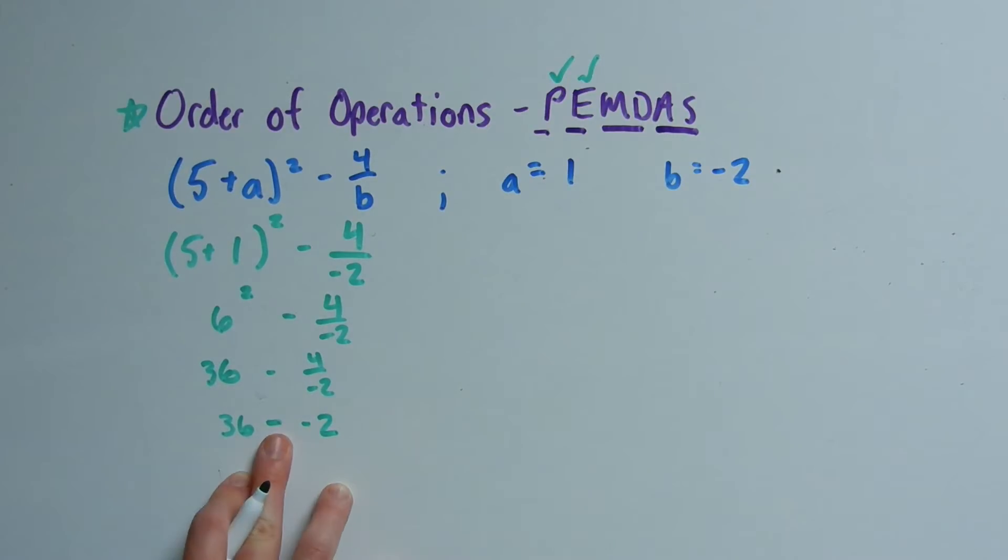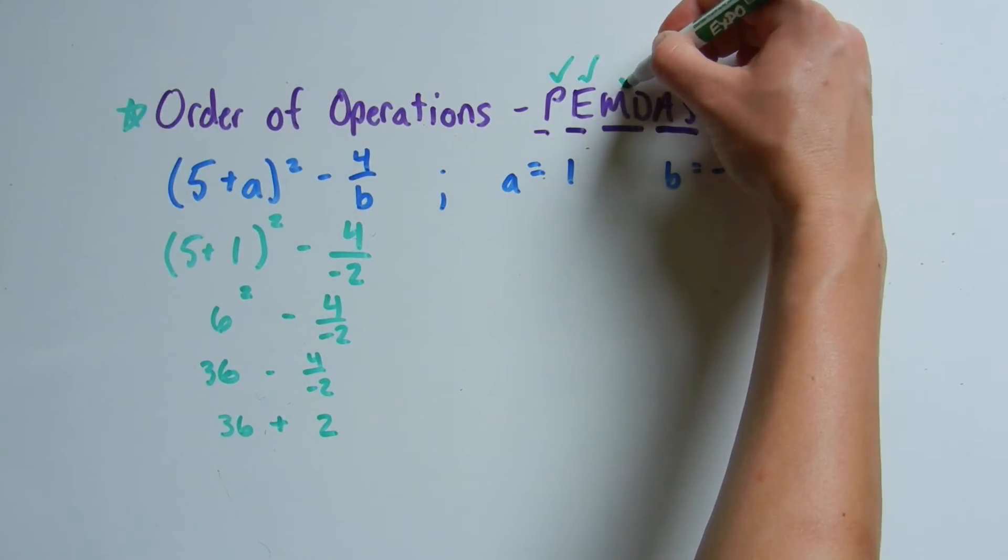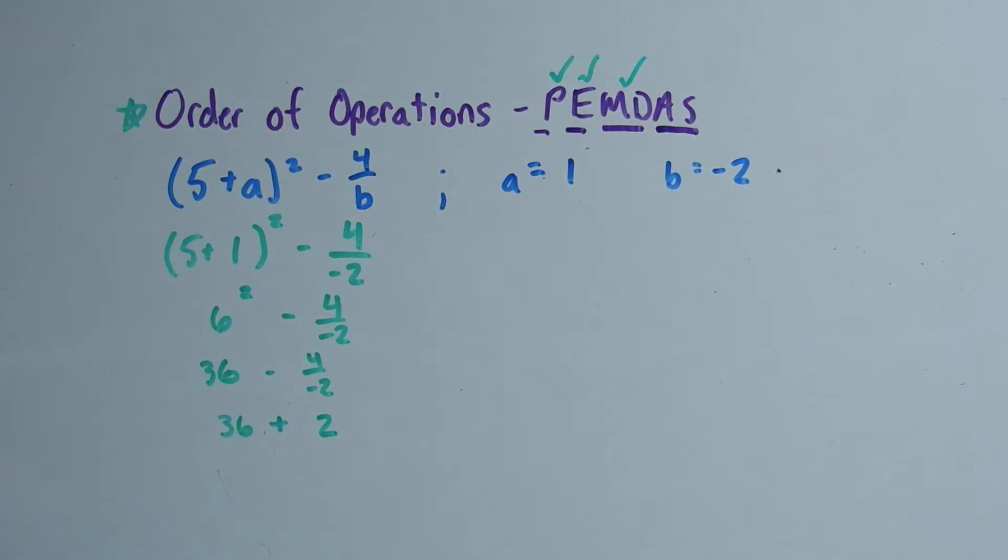However, when you subtract a negative you're really adding the positive of that number. So this, instead of 36 minus negative 2, would be 36 plus 2. So now we've done our multiplication and division, so we're left with just addition.